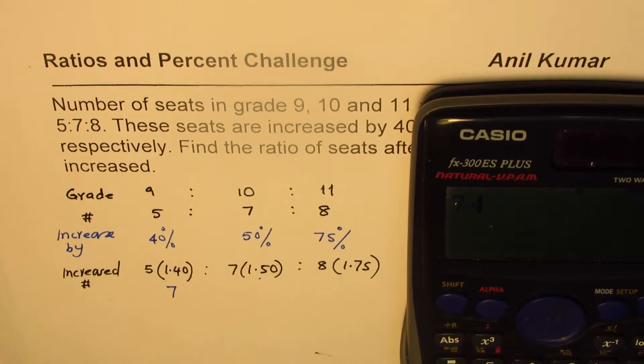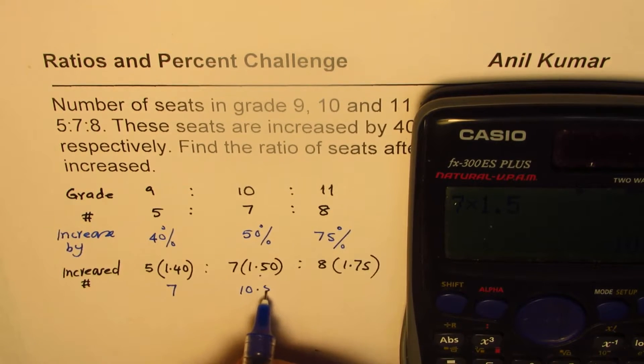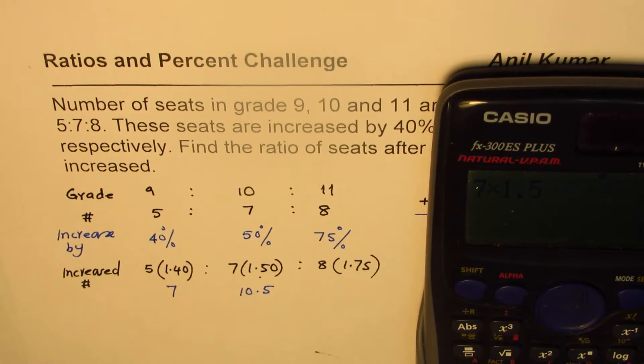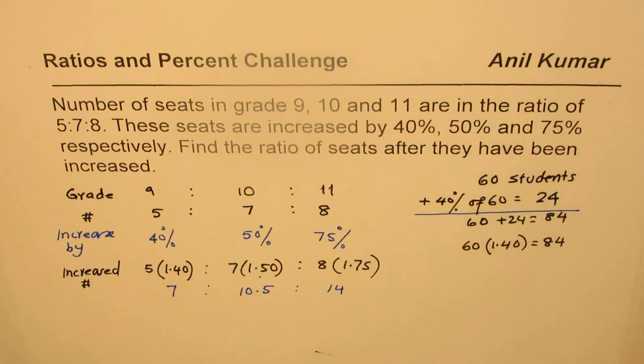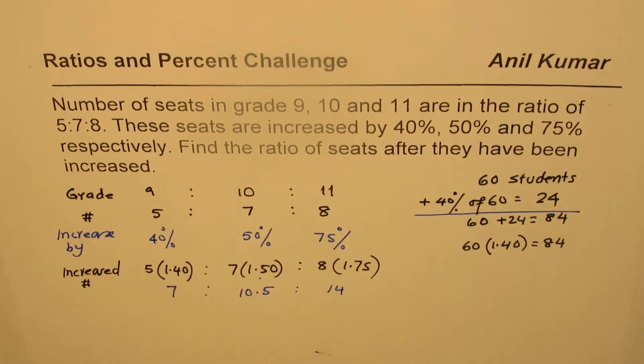Now here we have 7 times 1.5. It is equals to, in decimals, 10.5. So this number is 10.5. The last number here is 8 times 1.75. That is 14. So we get a 14 number here. So now, the increased ratio is 7 is to 10.5 is to 14.